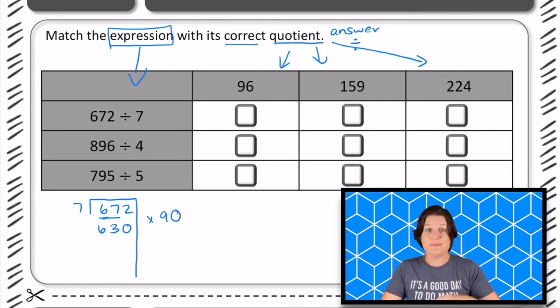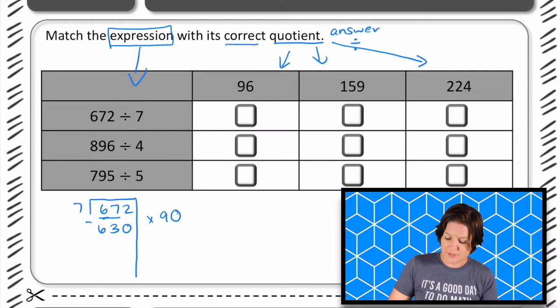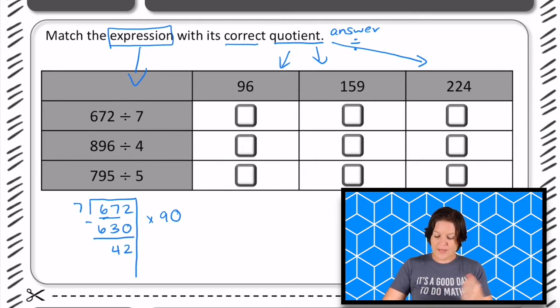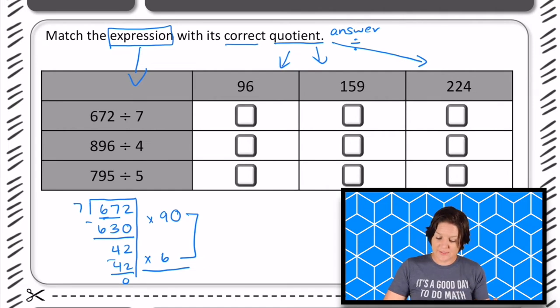So 7 times 90 is 630, and that's an awfully big chunk to take out. Subtract that and we get 42. And I know that 7 times 6 is 42. So here we have our partial quotients of 90 and 6. So when we add those together, 90 plus 6 is 96. We'll go ahead and mark that answer choice right there.